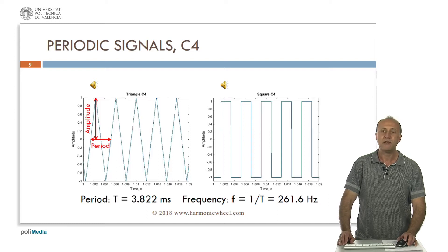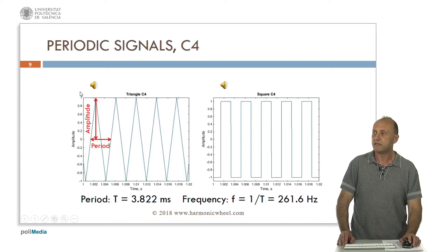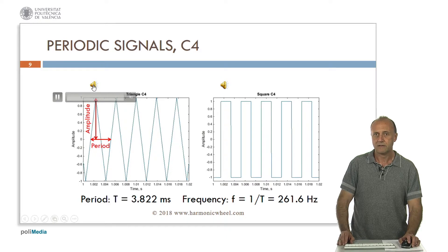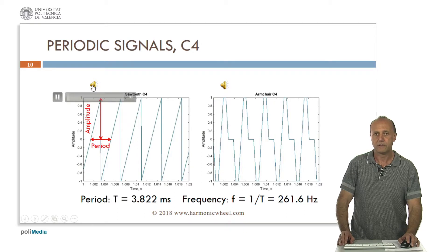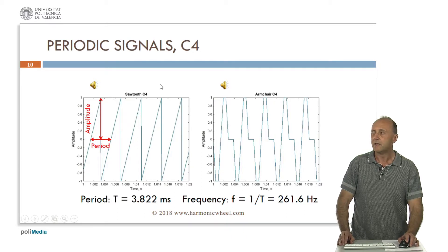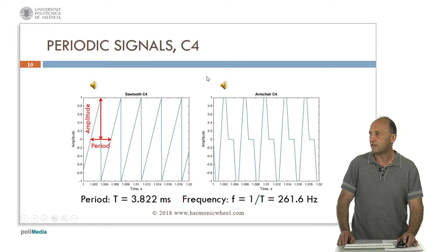Now let's consider other periodic signals. Some of them very simple, such as the triangle — this is a C4 — a square, the sawtooth, and now a bit more complex signal developed by me which I call armchair. Let's listen to its sound.